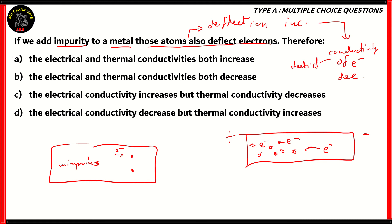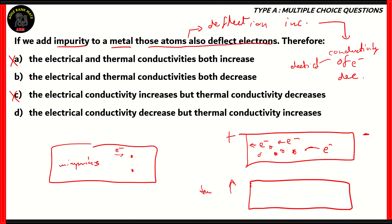So when conductivity of electrons decreases, that means the electrical conductivity decreases. We can therefore eliminate options A and C, because both of those say electrical conductivity increases — which is incorrect. Now we need to understand how thermal conductivity works. When there is an increase in temperature, there is an increase in energy in the atoms themselves, and the atoms start to oscillate about their mean positions.